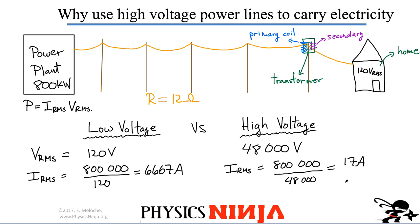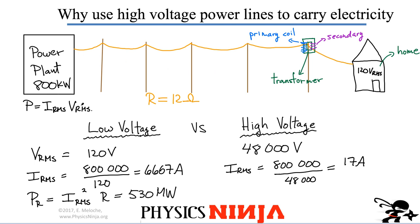In each case, let's calculate how much power is dissipated in the resistor. The power dissipated is I_RMS squared multiplied by the resistance. Notice the current gets squared, so the energy dissipated per second is going to be very, very large. Plugging in the numbers for the low voltage case gives 530 megawatts. Our power plant only puts out 800 kilowatts, so all the energy would be dissipated as heat — you're not successful in transmitting power to the home.